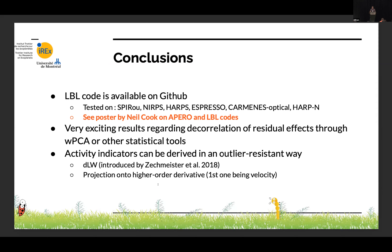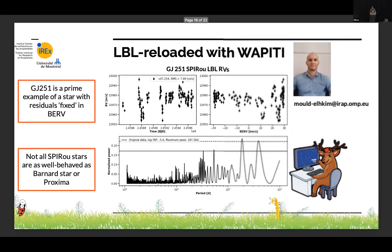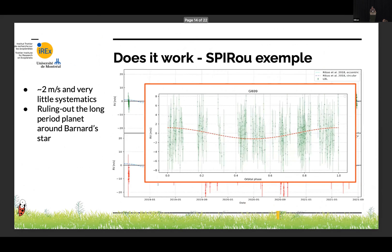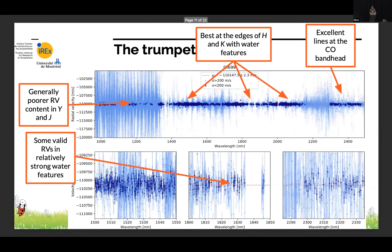Question about the trumpet plot: it's probably coming from SPIRou data itself, so it folds in the sensitivity of SPIRou? Yes, of course — the throughput is embedded in that. The Y band is supposed to be more information-rich, but that's because SPIRou's throughput falls off there, and the lines also get shallower in Y band.